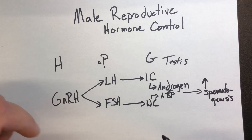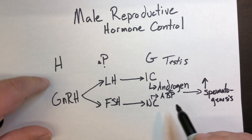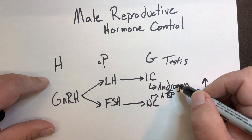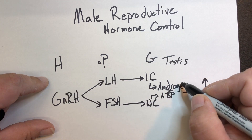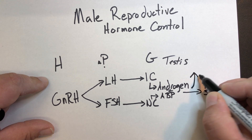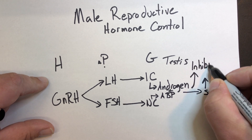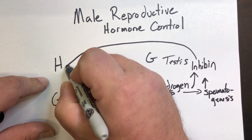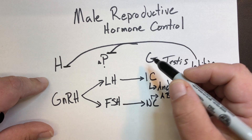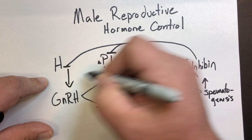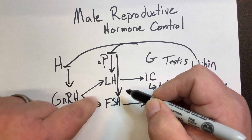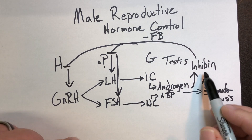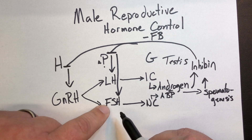Now, what we want to understand is regulation. Overall, whether we're talking about male or female, it's a set of hormones being controlled within this whole group. As androgens and spermatogenesis build up, we see the production of inhibin build up. Inhibin targets the hypothalamus and pituitary, and provides negative feedback — inhibiting GnRH, LH, and FSH production.